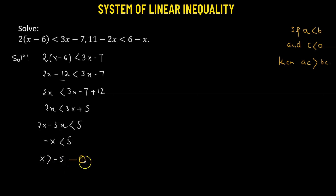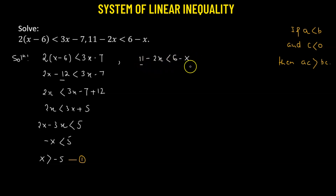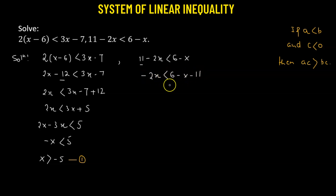Let's label this as number 1. Now we'll go to the second inequality: 11 minus 2x less than 6 minus x. We transpose 11 to the right hand side to get negative 2x less than 6 minus 11, which gives us negative 2x less than negative x. So 6 minus 11 will be negative 5.